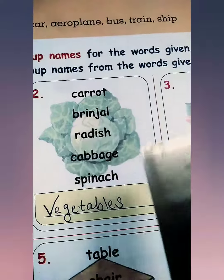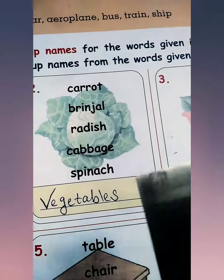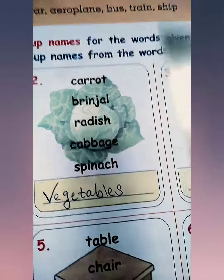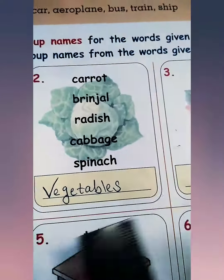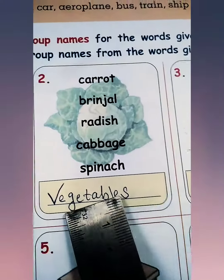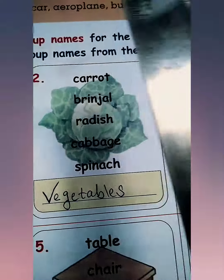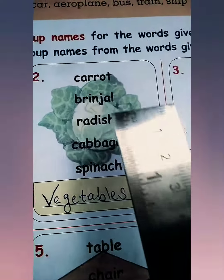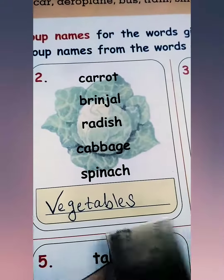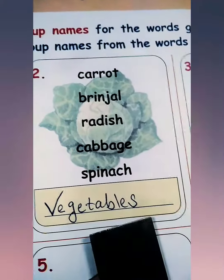Carrot, green chilli, radish, cabbage, spinach — these all are examples of vegetables. जैसे ही हमारे सामने इस तरह के कुछ names आ जाते हैं, हम फ़ौरन click हो जाते हैं कि वो vegetables के examples हैं।